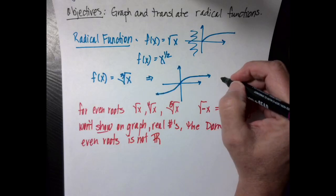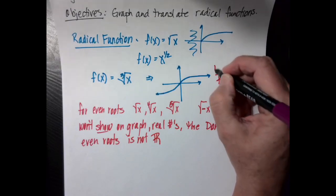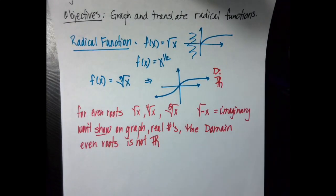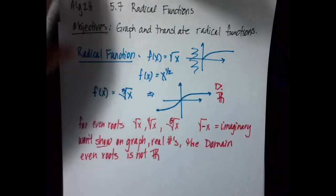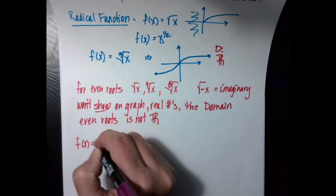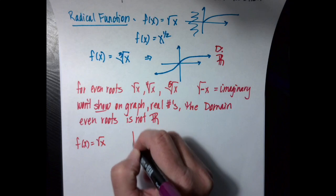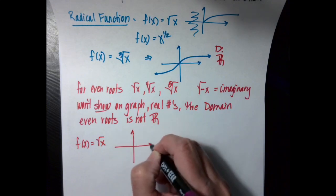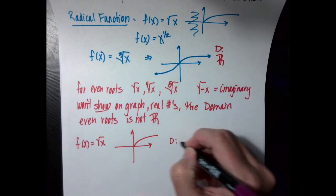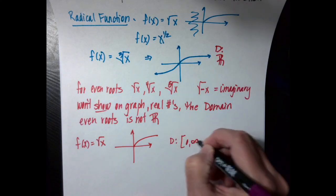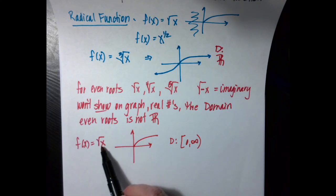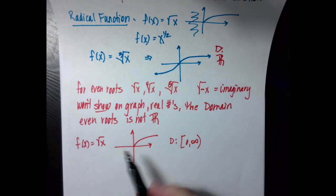The domain of the cube root, on the other hand, would be all real numbers. For f of x equal to the square root of x, the graph starts at zero and goes that way. The domain would be zero to positive infinity. I can take the square root of zero, which is zero, but I can't take the square root of a negative number.